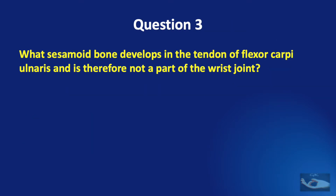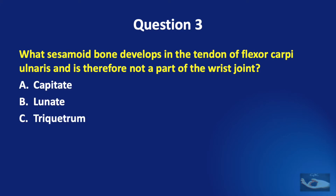Question number three. What sesamoid bone develops in the tendon of flexor carpi ulnaris and is therefore not a part of the wrist joint? Capitate, lunate, triquetrum, or pisiform?